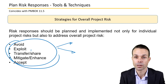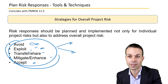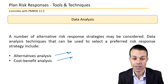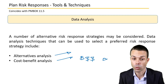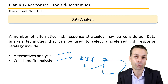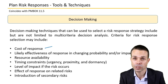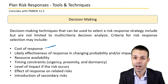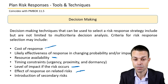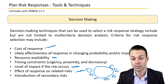Strategies for overall project risk include all of those threats and opportunities approaches: avoiding, accepting, exploiting, sharing, enhancing, transferring, or mitigating the project risk. Data analysis may be needed to look at alternatives and cost-benefit analysis — does the risk response cost a lot and give little benefit, or cost little and give large benefit? Decision making factors include cost of the response, likely effectiveness, resource availability, level of impact, effect of the response on related risks, and the introduction of secondary risks.